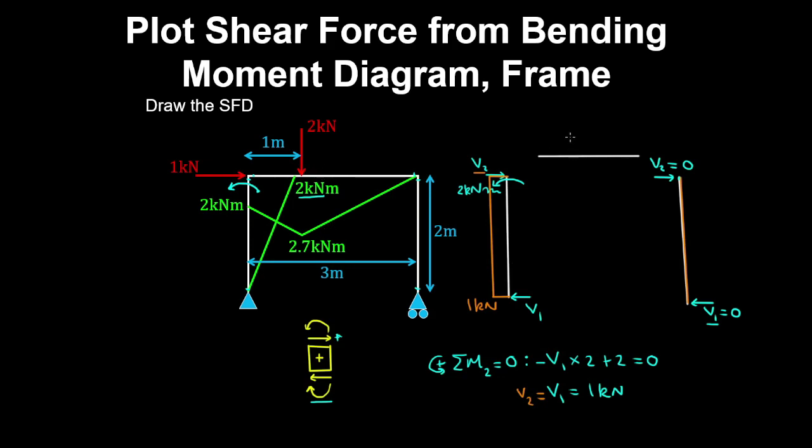Now on the beam, we have an external point load acting. And by cutting the beam just after the joint, we expose an internal shear force, and another one on the other side, where we cut it before the joint.